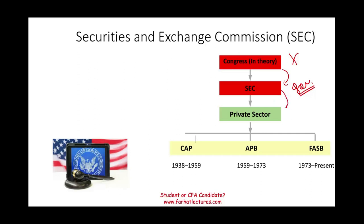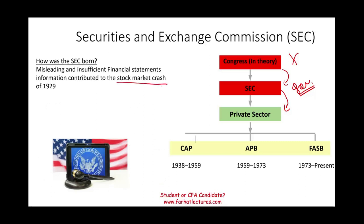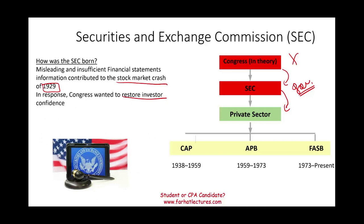Let's look at how the SEC was created. The SEC came to life after the stock market crash of 1929. Many companies were reporting misleading information, or not reporting enough information on their financial statements, which misled investors and led to the crash. As a result, Congress wanted to restore confidence in the stock market, so they created the Securities and Exchange Commission to oversee the market.